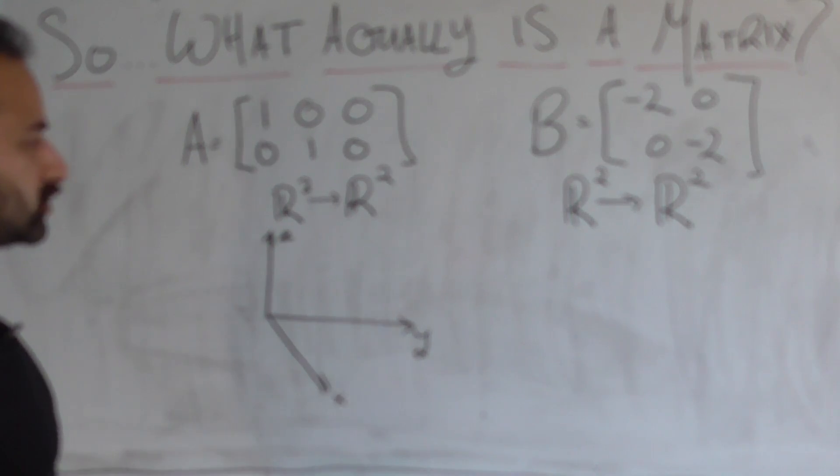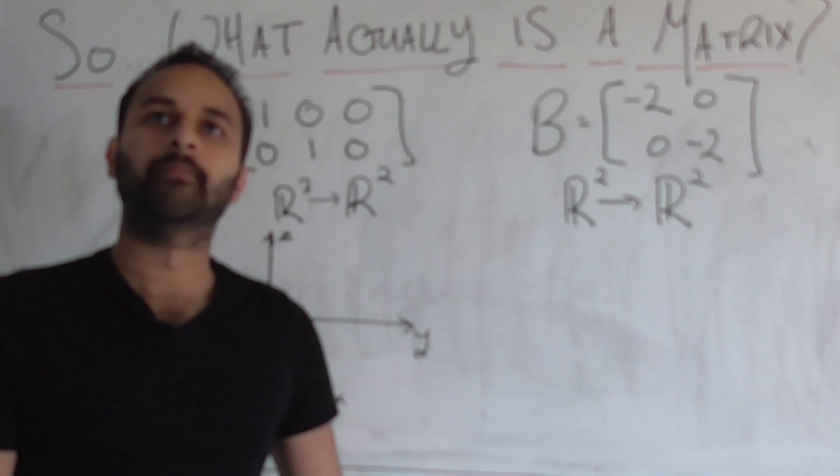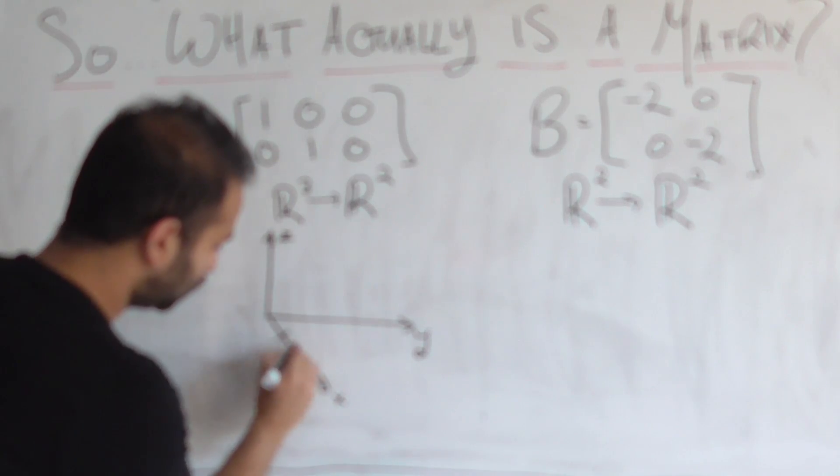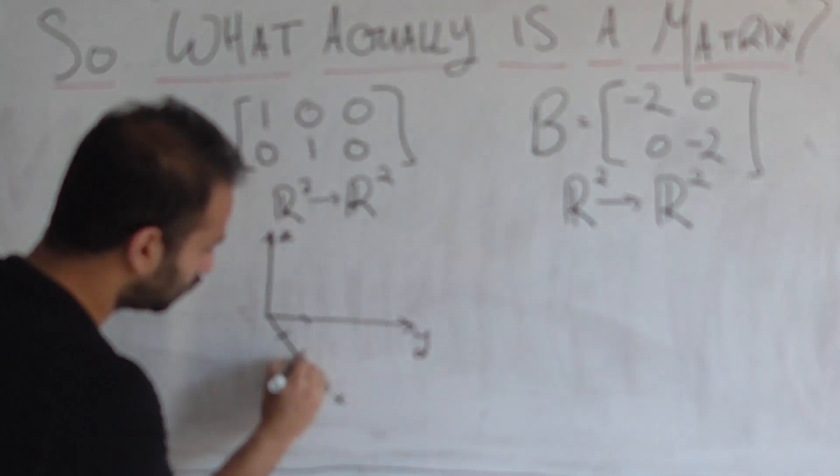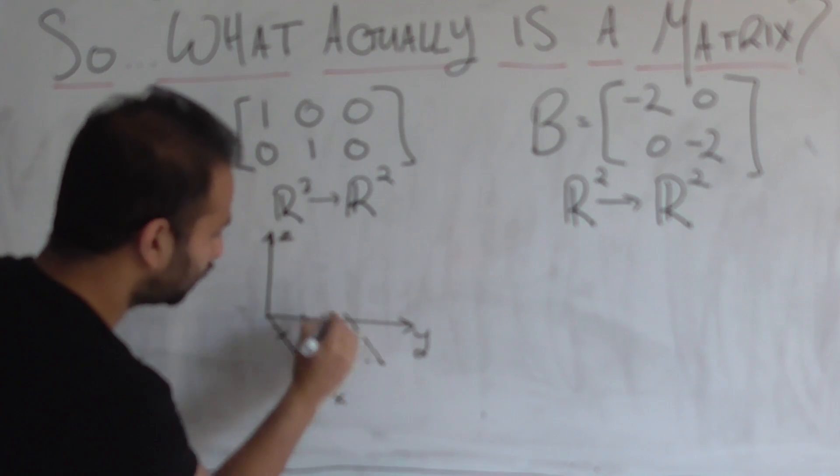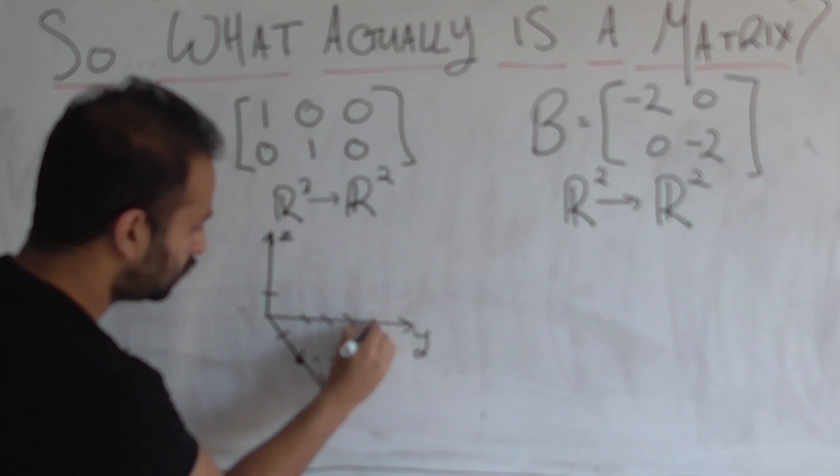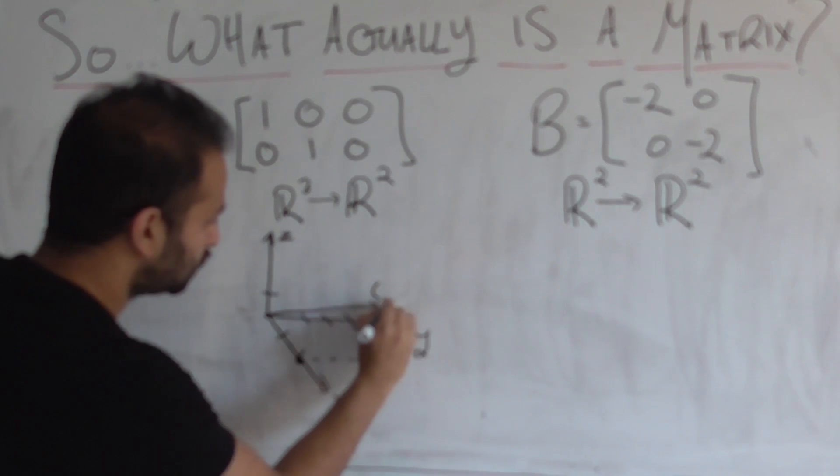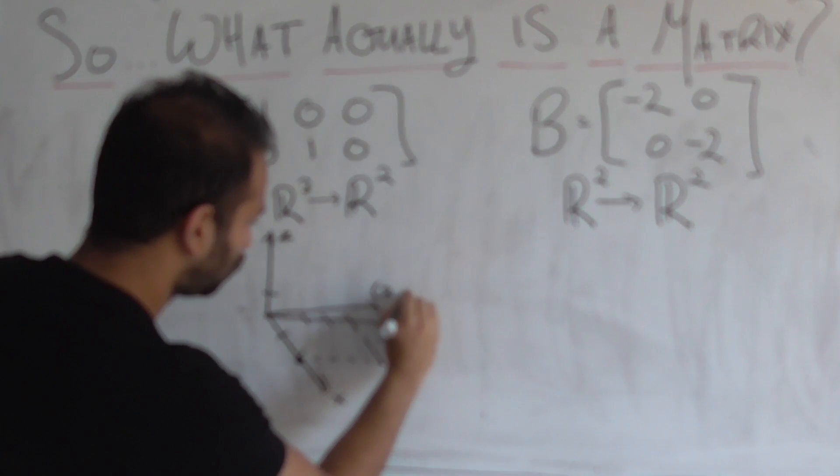Now let's take a vector in three-dimensional space, let's take the vector, let's do, the X will be two units, the Y will be one unit, actually let's do Y is three units, so it's here, and then the Z will be one unit, let's say. So that vector looks like this, it's the vector two, three, one.